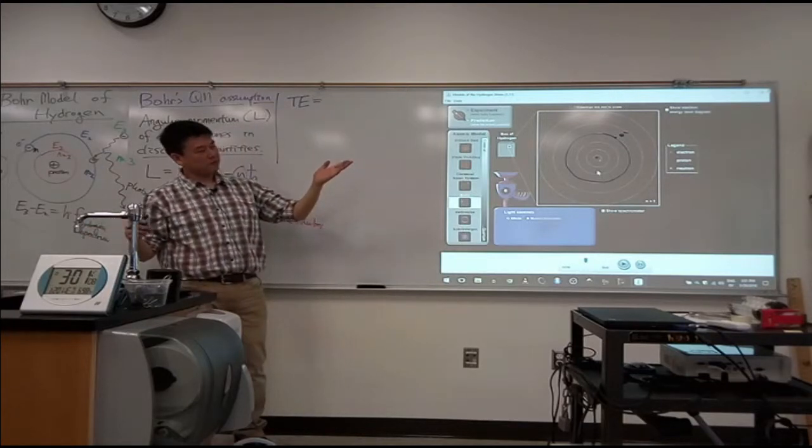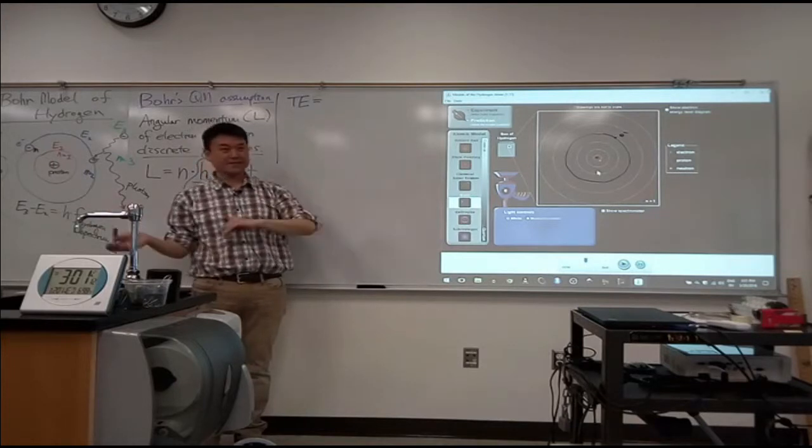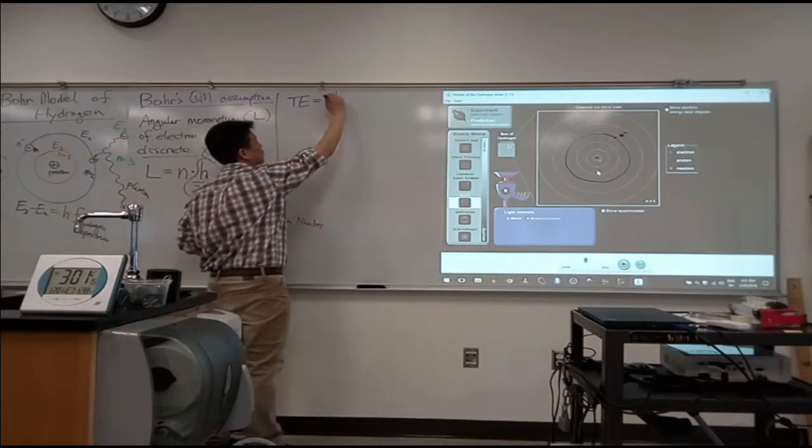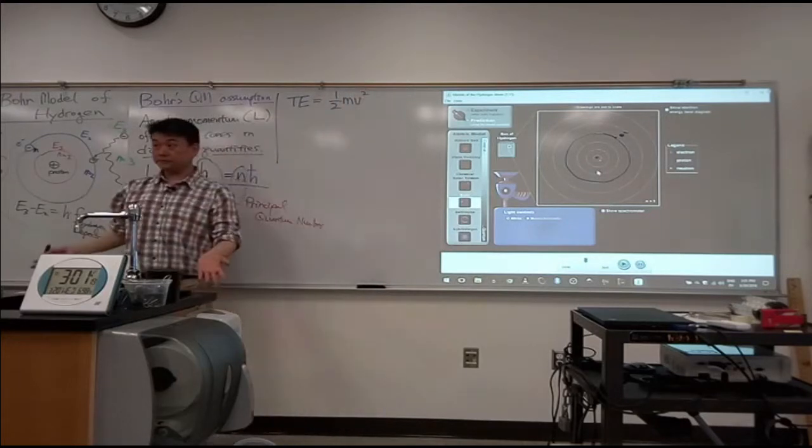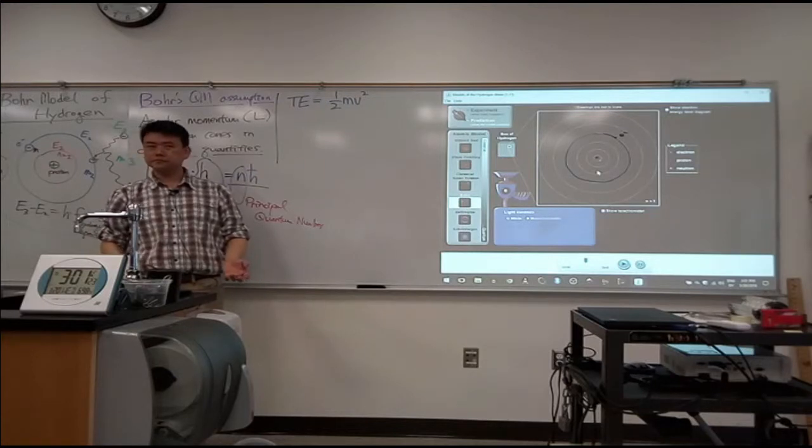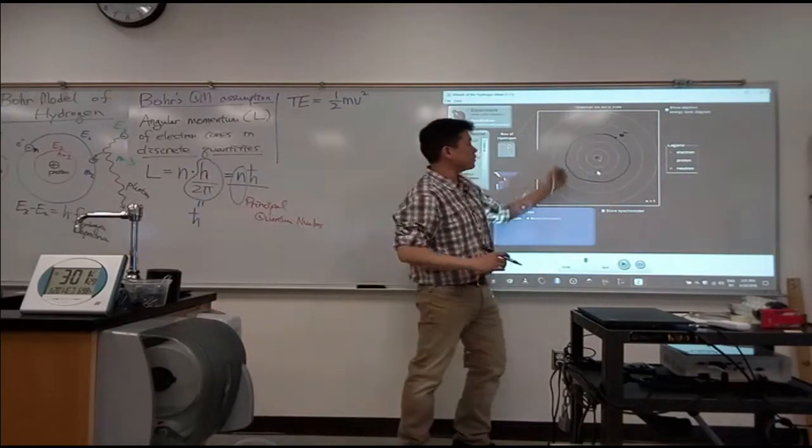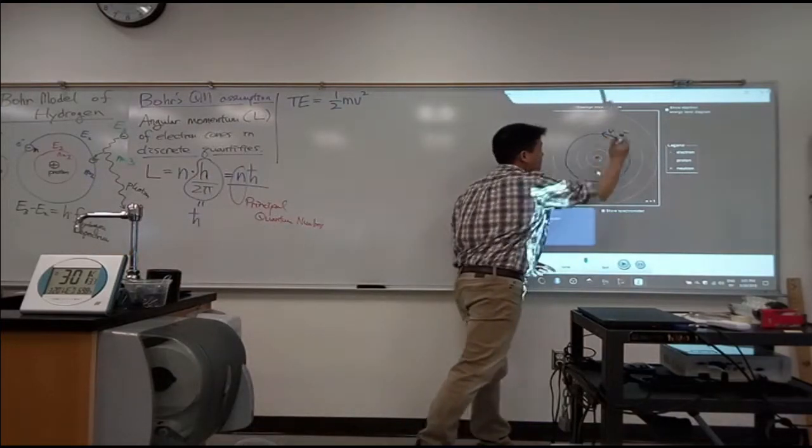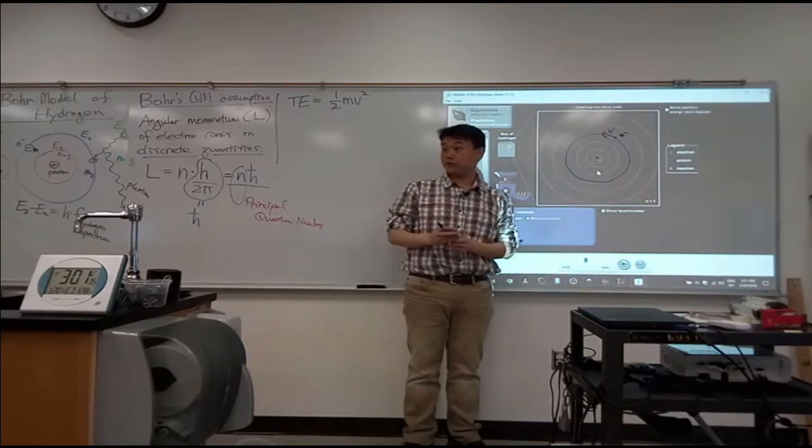I'm going to make a bold assumption that this is going to be non-relativistic. Make things easier for me. So its kinetic energy will be one-half mv squared, right? Where do we get potential energy from? Electric potential. Yeah, electric potential energy. So this electron is moving in circle, moving at speed of v. It's accelerating towards proton because of electric force.